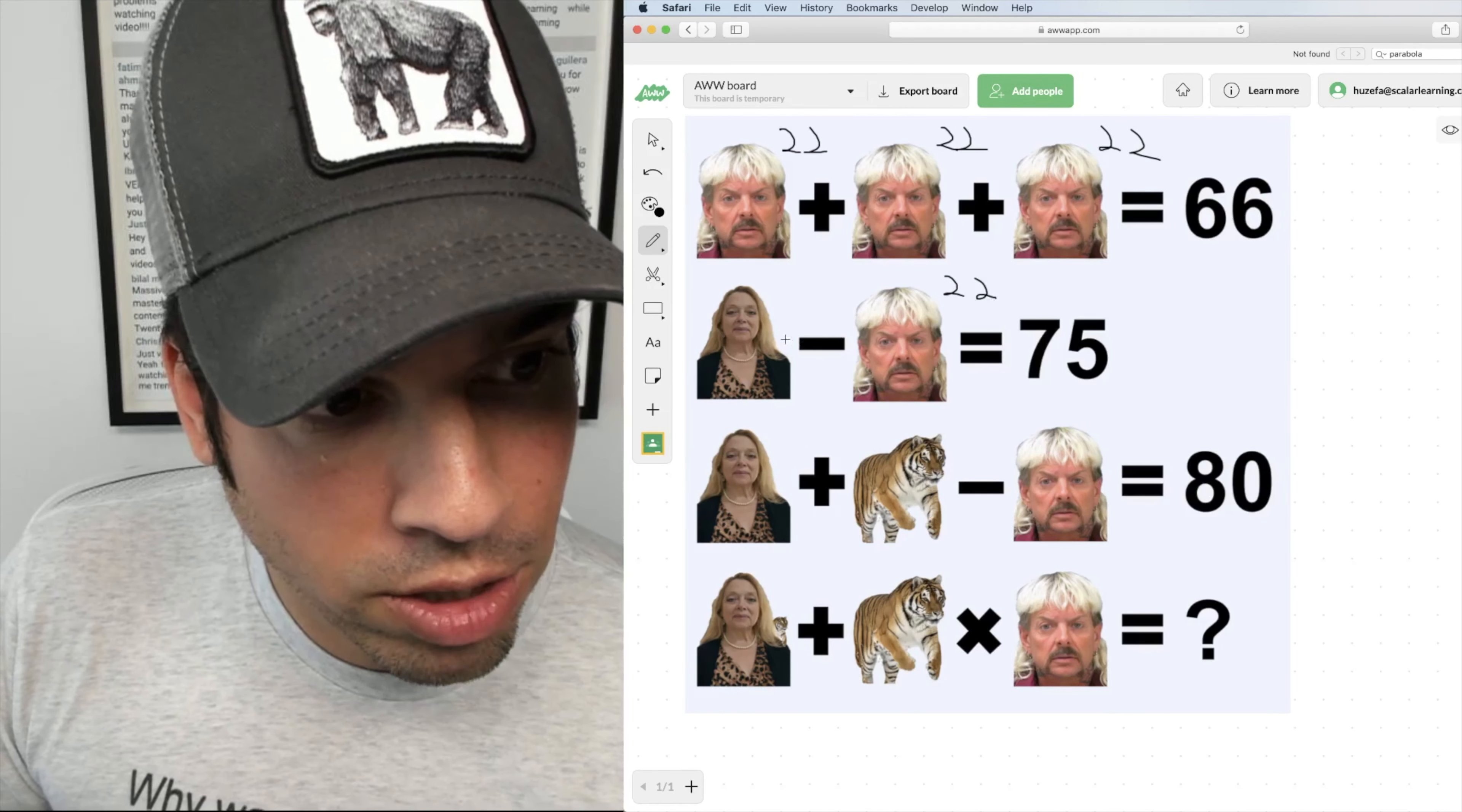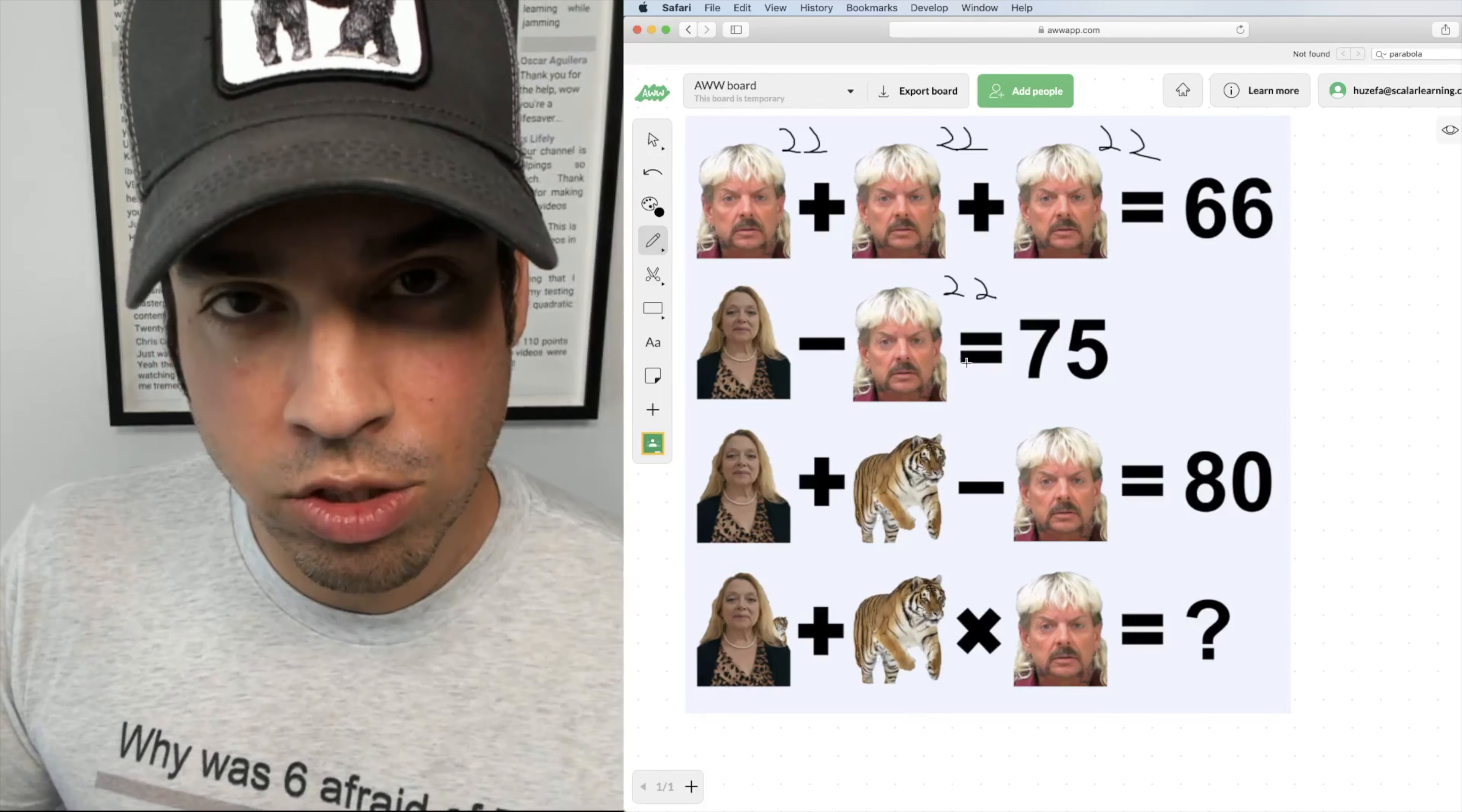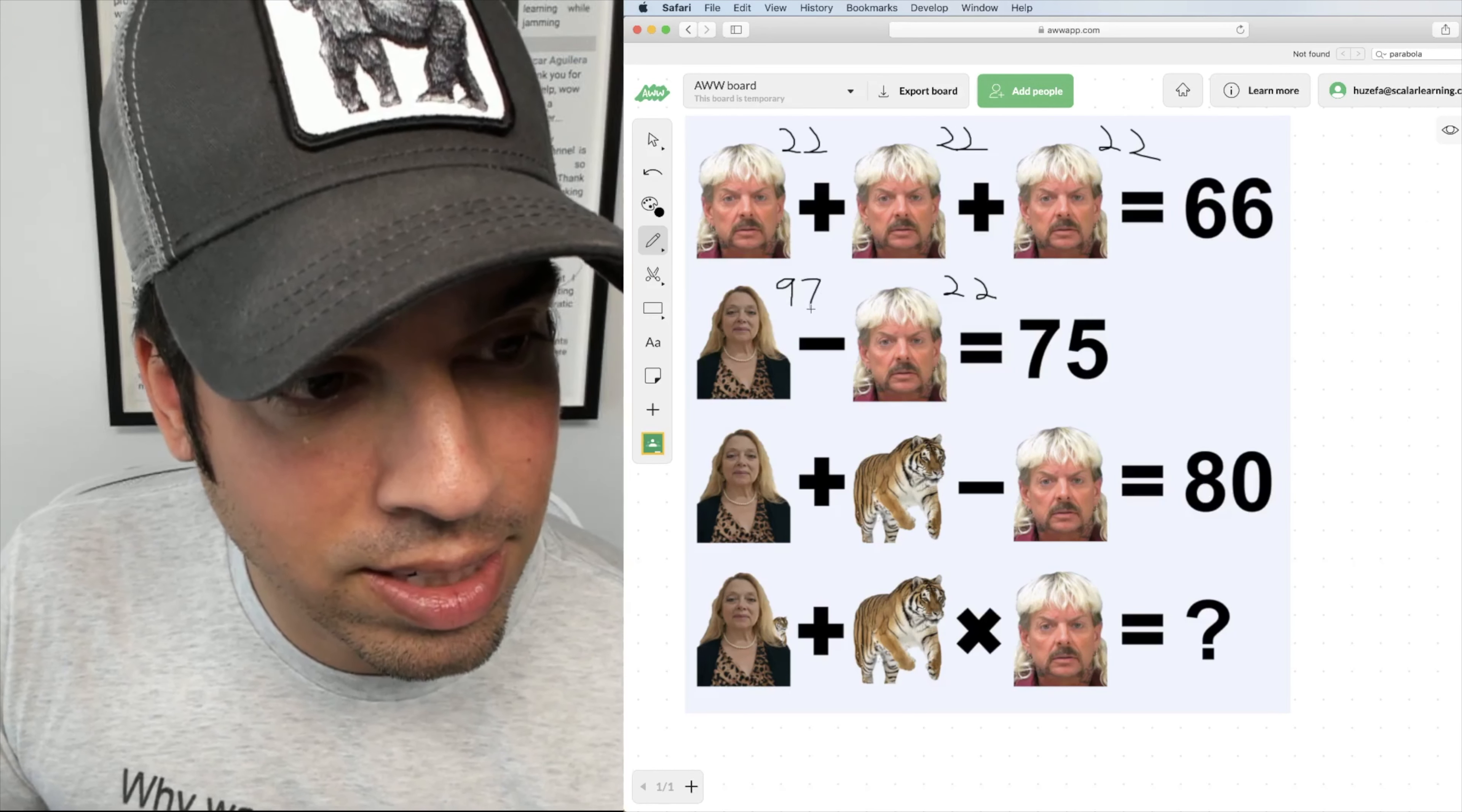So now we know that he's 22 down here, so it's kind of like what minus 22 equals 75, and the way we can figure that out is I can add 22 to both sides. That's kind of a trick of the trade when we're solving equations. So add 22 to 75 and we get 97.